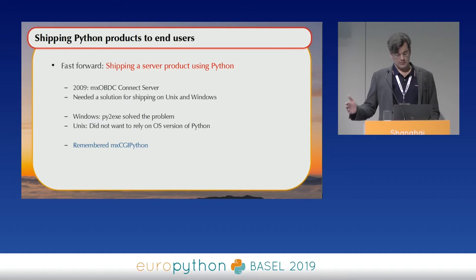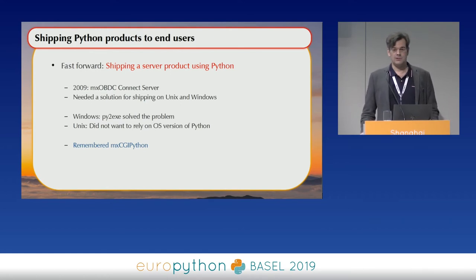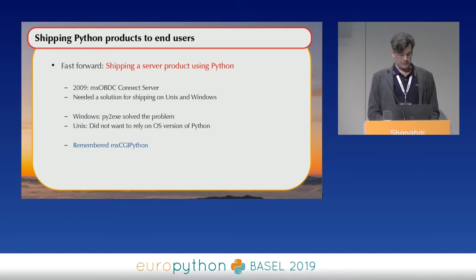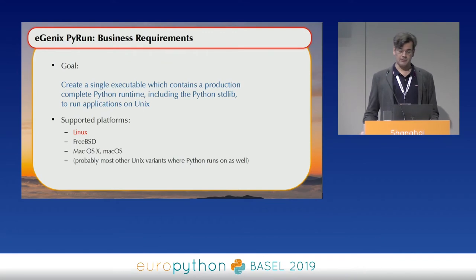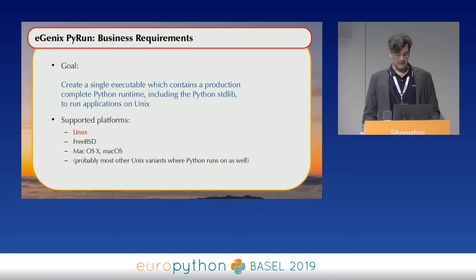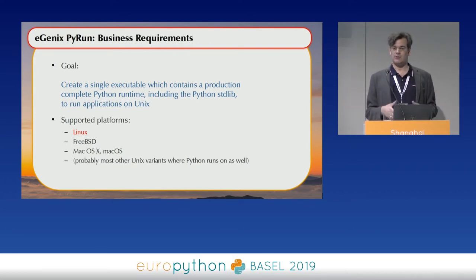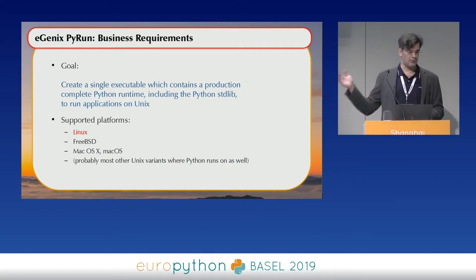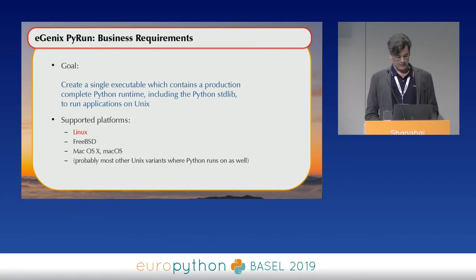For Windows, the solution was very easy — we could just use Py2Exe. So PyRun currently does not run on Windows because of this; we don't have a need there. But on Unix, there was no appropriate solution. The business requirement was to create a single executable that has the complete Python runtime, including the standard library, in a single file — so that installing Python on a machine literally becomes a single copy operation. And I wanted it to work on Linux, FreeBSD, and Mac OS.